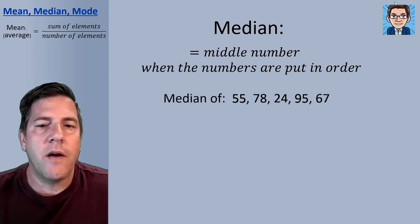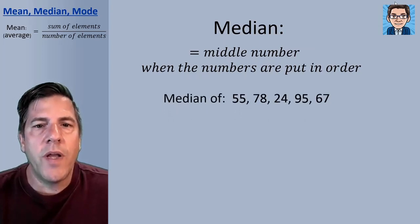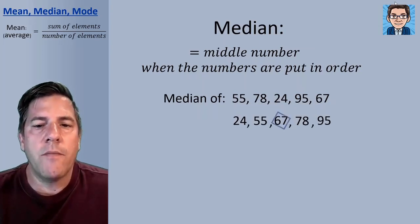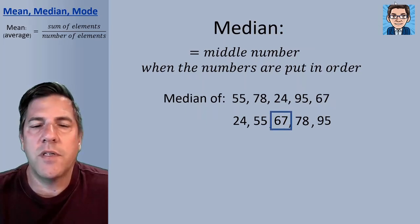So we wanted to find a median of this list of numbers. We could take and rearrange the numbers in order. It makes it a lot easier to see what the middle number is. And then the middle number for this group of numbers is just going to be 67.